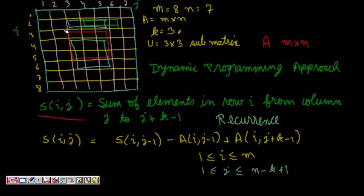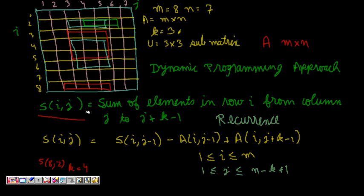To illustrate: if i is 8, we take row 8 and sum a few columns. So S[8][2] with K equal to 4 means we are summing four columns in row 8 starting from column 2. In general, S[i][j] is the sum of K elements in row i starting from column j, i.e., summing elements from column j to column j+k−1.